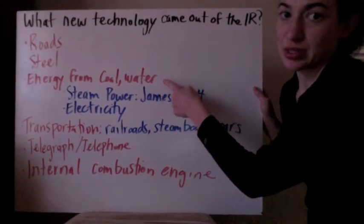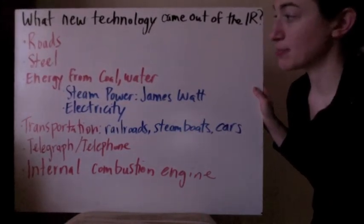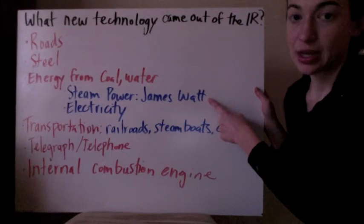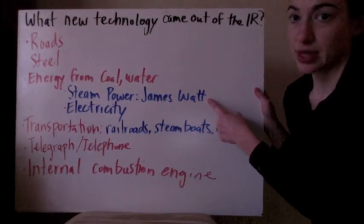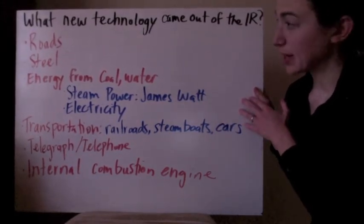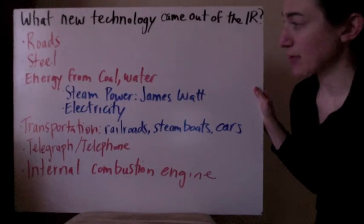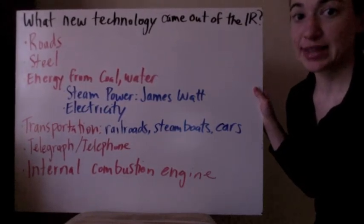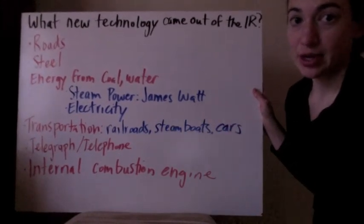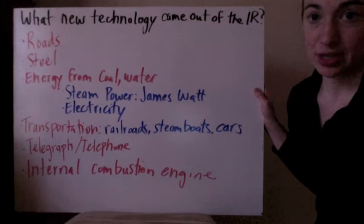A big thing was energy sources. Energy started with coal and water. Coal was very cheap at the time, making it easy for generating power. Steam power — the steam engine — came from James Watt, and for a long time was used for power: you get power from water, steam it up, and it becomes power. Coal is burned to make power — a very dirty source of energy, but easy at the time. Finally, electricity came out of this as well. You need electricity to power factories and lights at night so you can continue working, so electricity eventually came out of the Industrial Revolution.